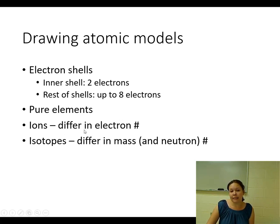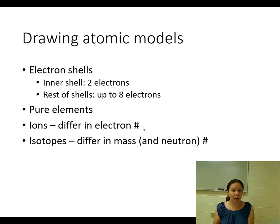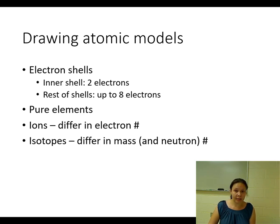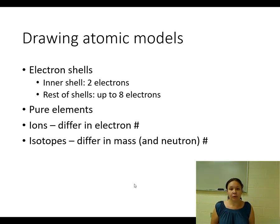Ions differ in their electron number. Ions are written with the element symbol and a plus or minus in the upper right corner. A plus indicates that you have lost electrons, and a minus indicates you have gained electrons, with the number indicating how many. For example, if you had carbon with a plus 1 charge, that means you lost one electron — so if you had 4 electrons in the outer shell, you would remove one.